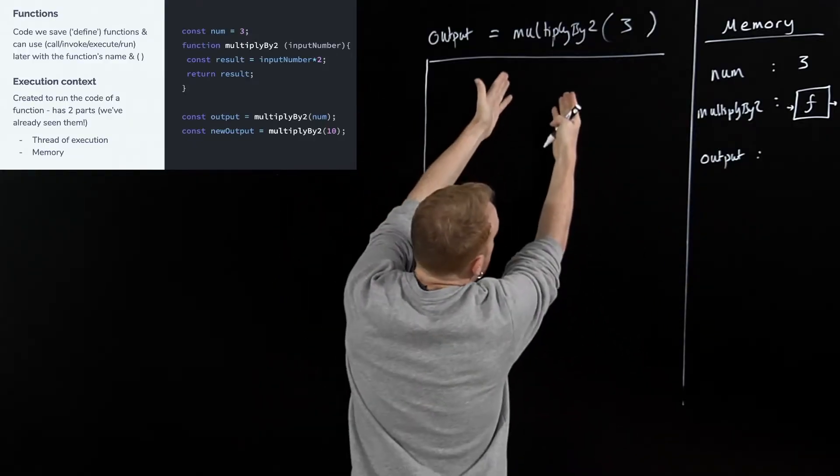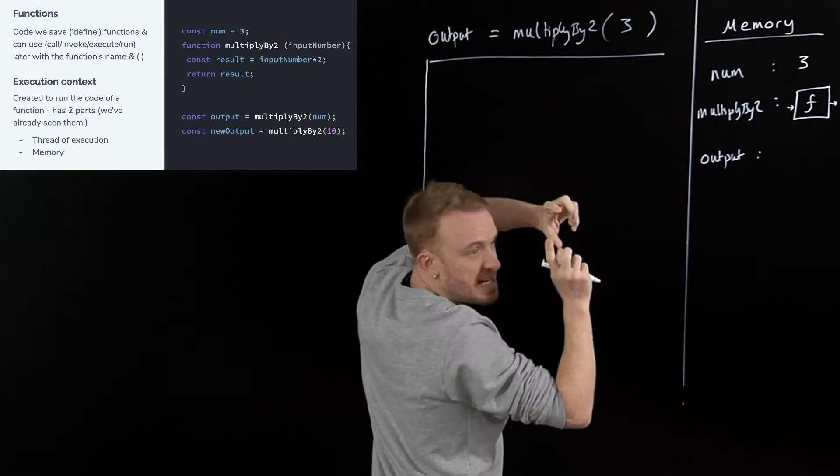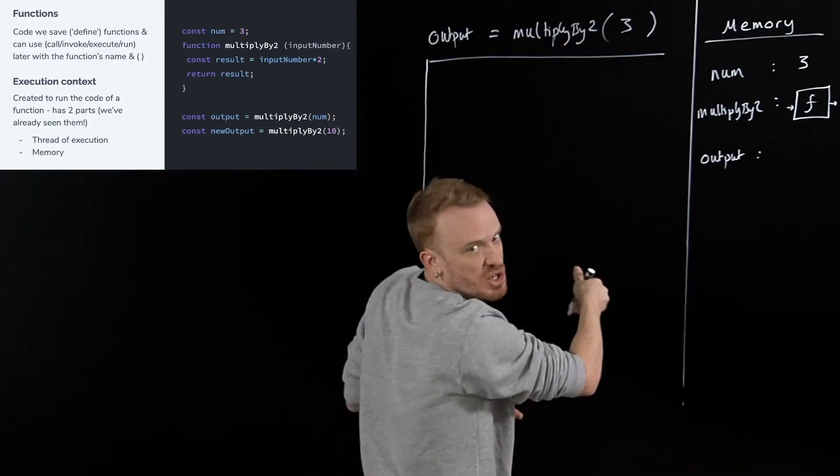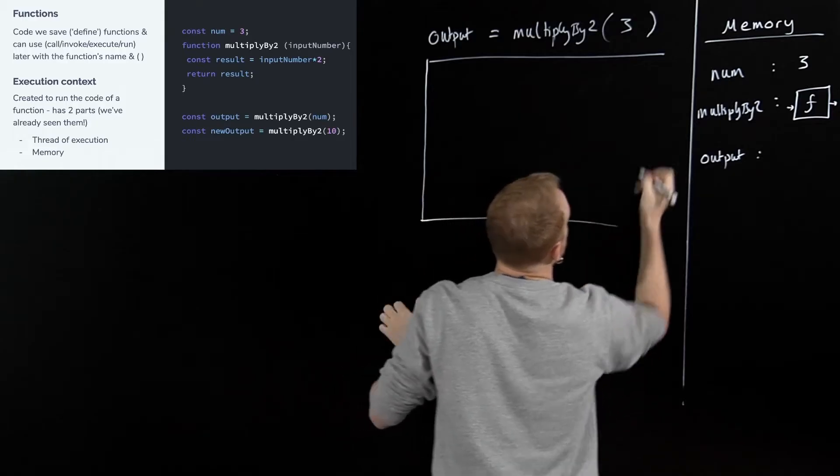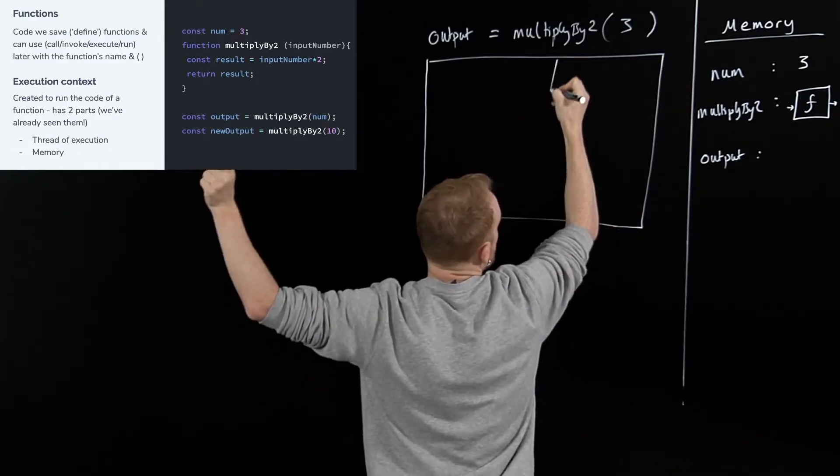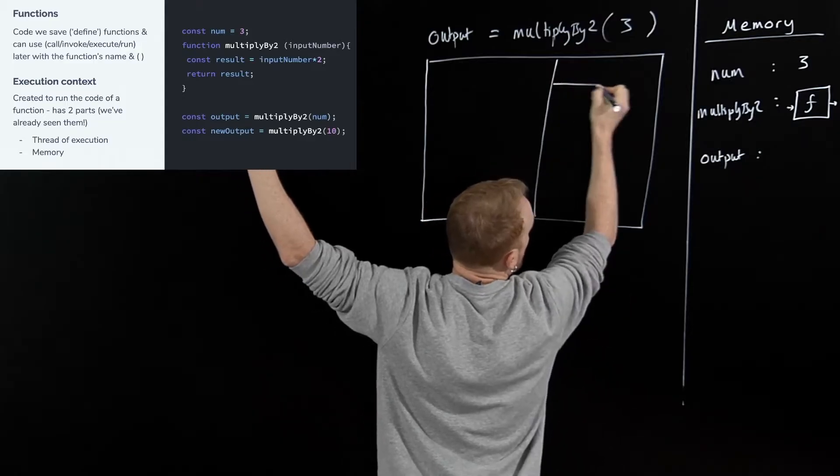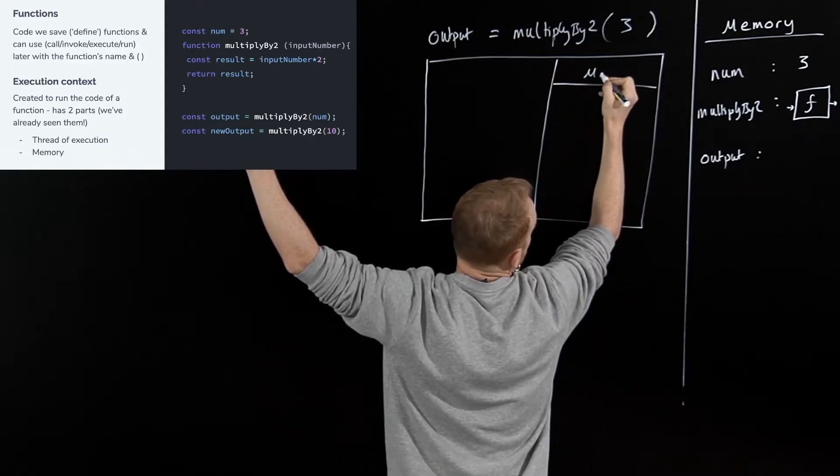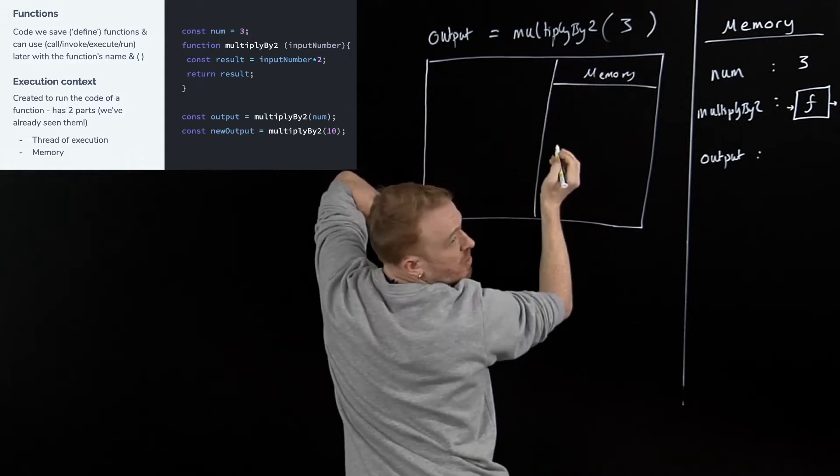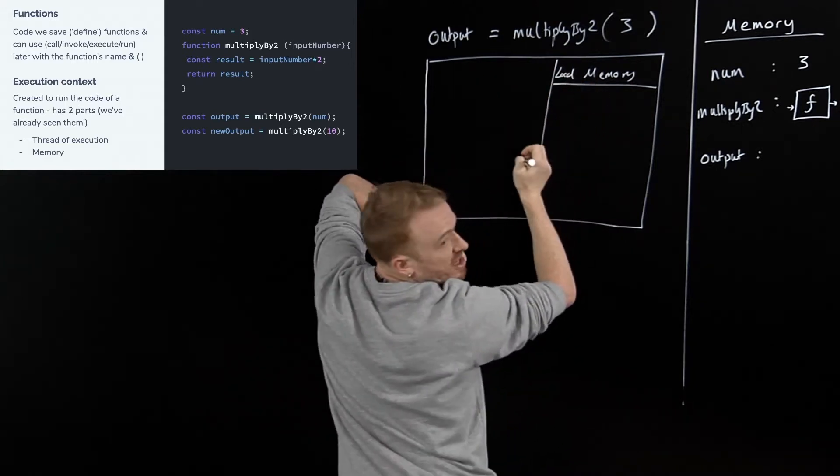As soon as we start running a little function, a little mini bit of code, we create a mini program, a mini execution context. Here it is. I've made this very big. There it is. And it has, as I say, two parts. One, the memory,